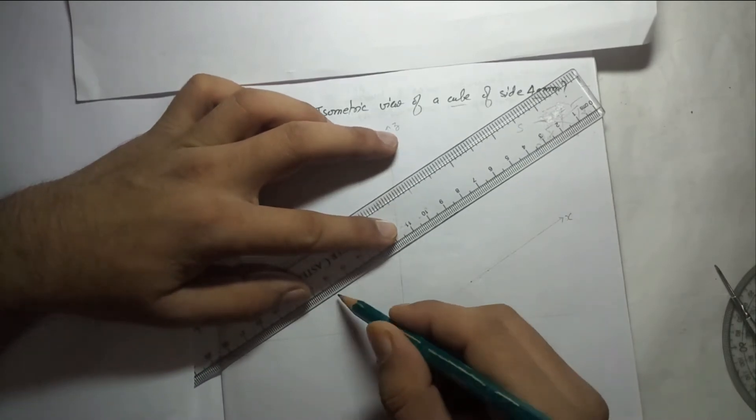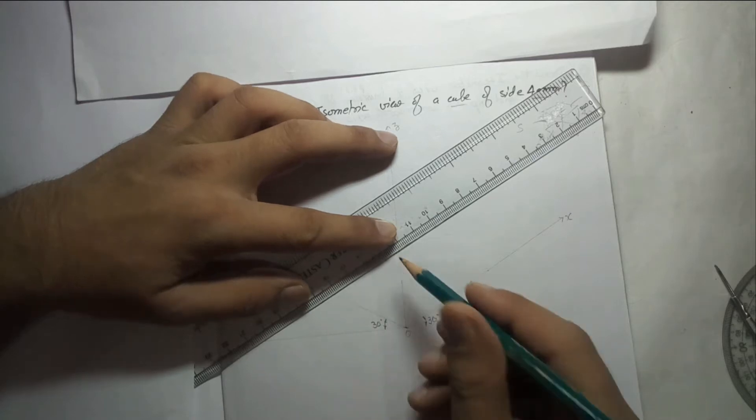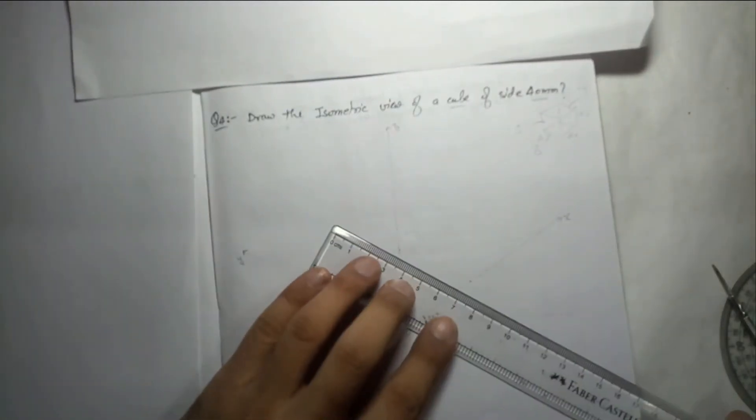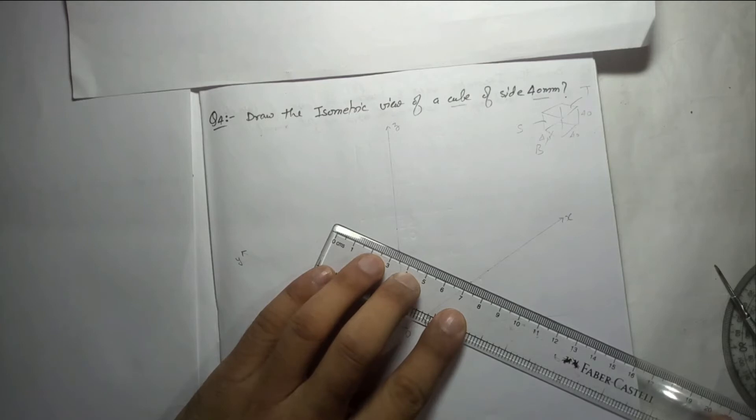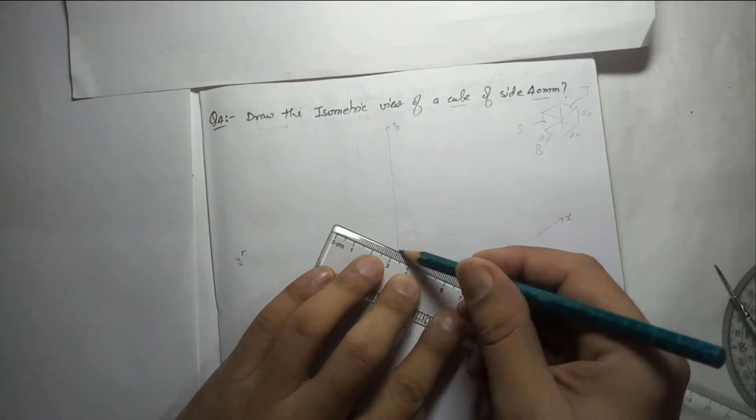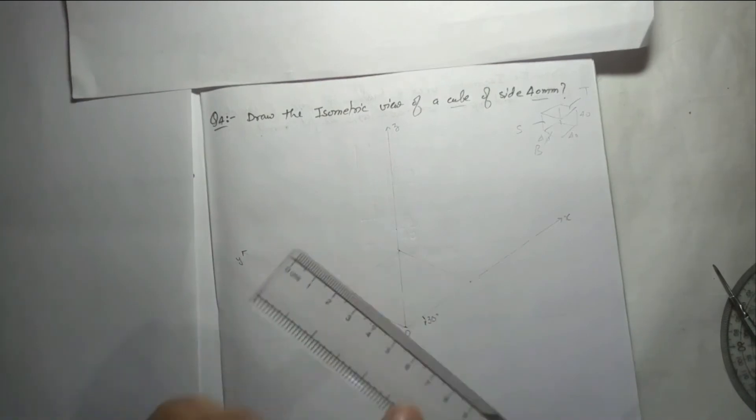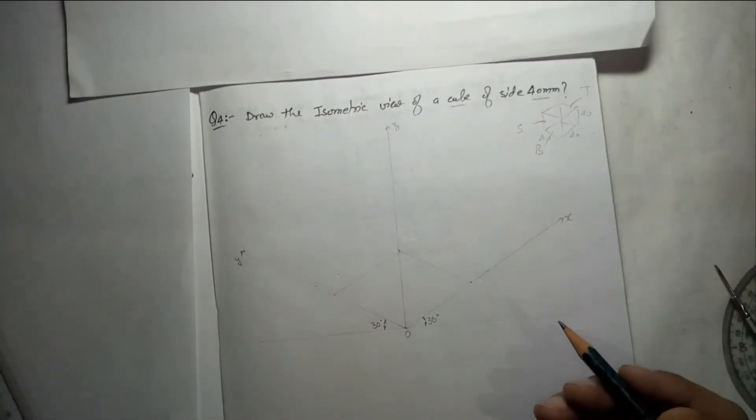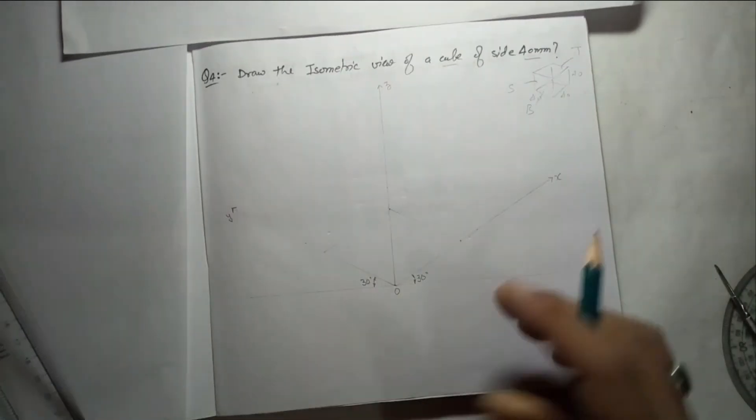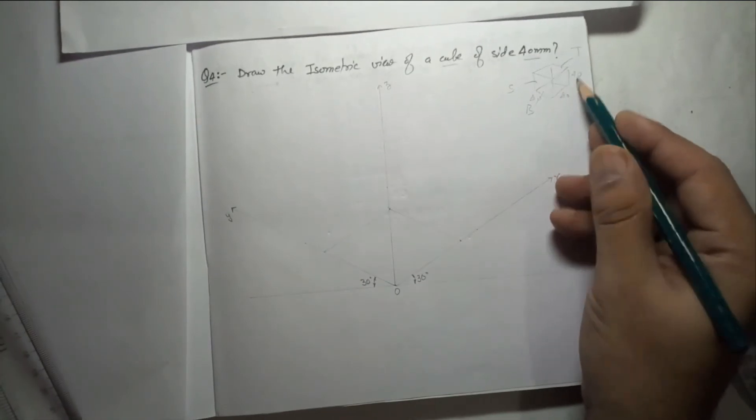You get the point. Now you have to join it with the 40 point on OY but very light - all these are construction lines. Later on we will see which part will be dark, and you are not allowed to erase any of the construction lines. This is required, it will show how we are making the diagram. So this is the base of the cube, 40.